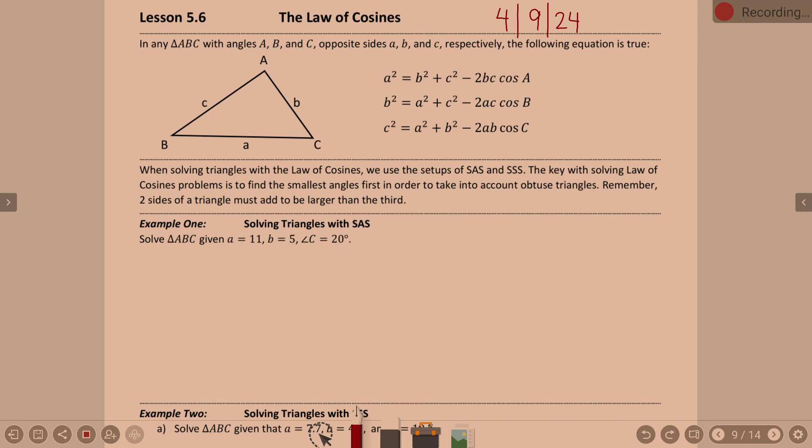When solving triangles with law of cosines, we are specifically going to be talking about side-angle-side and side-side-side setups — two setups we did not talk about with law of sines. An important key point: the key with solving law of cosines problems is to find the smallest angles first in order to take into account obtuse angles.